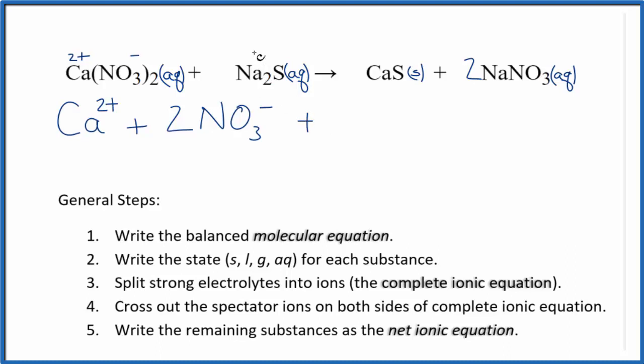For sodium, group 1 on the periodic table, it has a 1 plus ionic charge. And then sulfide 2 minus. So we have 2 sodium ions and then we have the sulfide ion, S2 minus. These are the reactants in our net ionic equation.